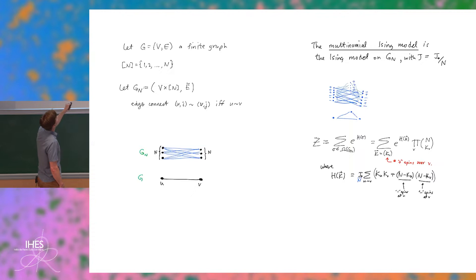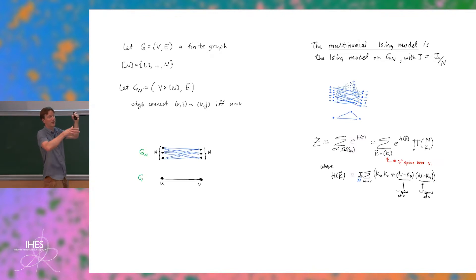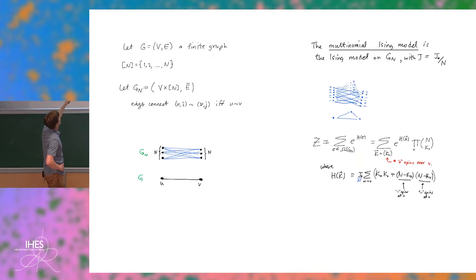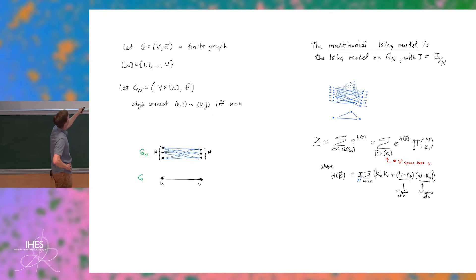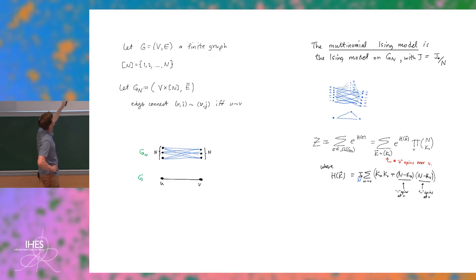I take the Ising model on G_n, and the interaction strength is divided by n. This graph has lots of symmetry — over each vertex there's a symmetric group action, a product of symmetric groups one over each vertex — because of the complete bipartite construction. So I don't care about the individual spin locations above each vertex; I just care about how many are plus and how many are minus. I record k_v, the number of plus spins over each vertex.